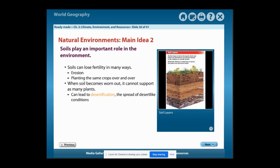Natural environments main idea number 2: Soils play an important role in the environment. Soils can lose their fertility in many ways: Erosion. Planting the same crops over and over can cause soil to not be fertile. When soil becomes worn out, it cannot support as many plants. This can lead to desertification, the spread of desert-like conditions.